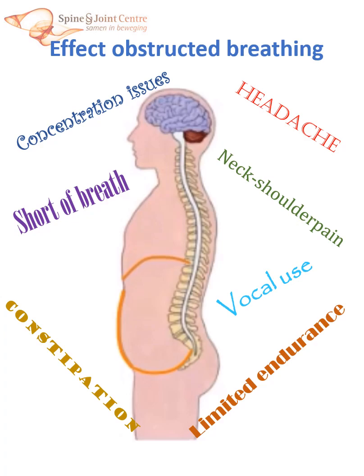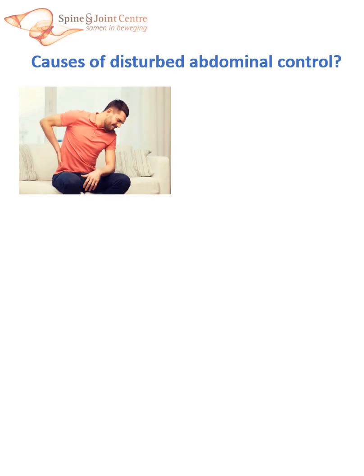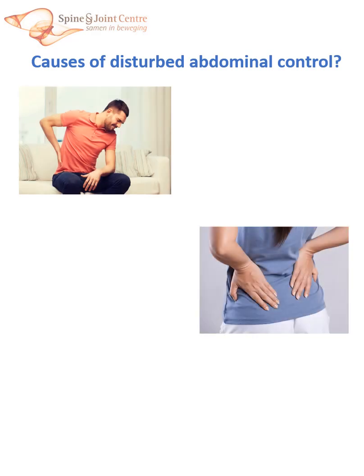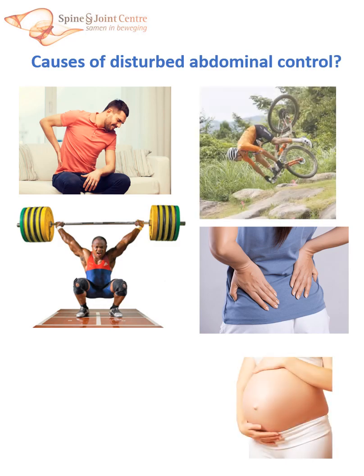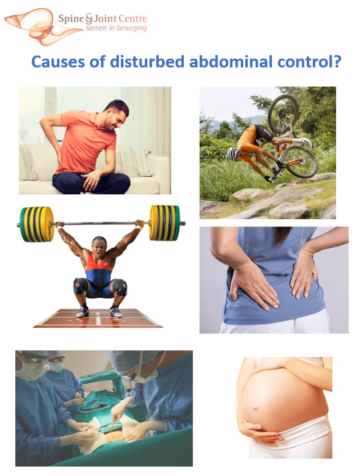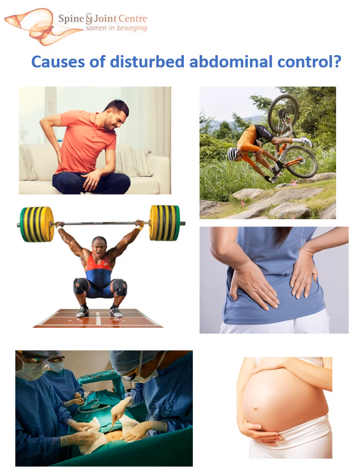This may lead to a diversity of complaints not primarily related to low back or pelvic complaints. But there is more. Thanks to Paul Hodges and colleagues, we know that altered abdominal control is related to back and pelvic complaints. In addition, there is increasing evidence that distortion of abdominal wall control can have many other causes — for example, overburdening, pregnancy, accidents, or abdominal wall surgery.